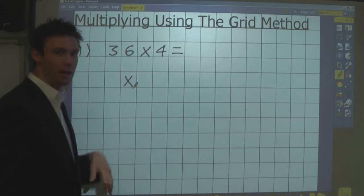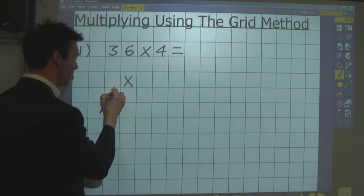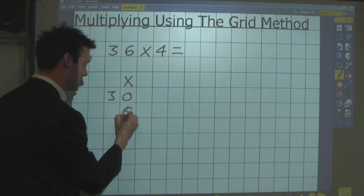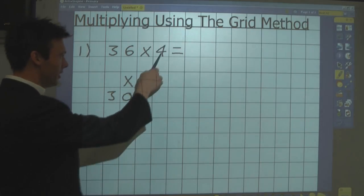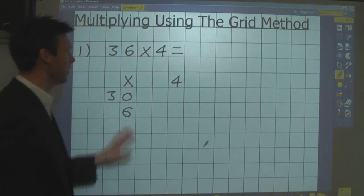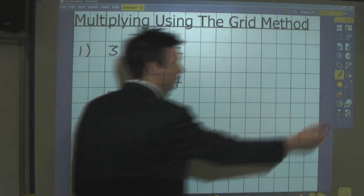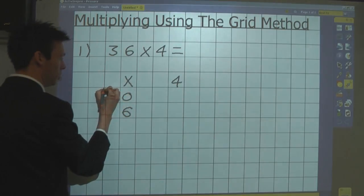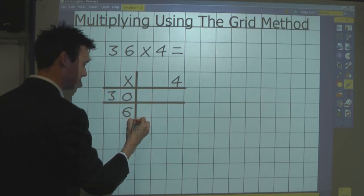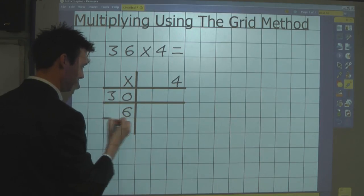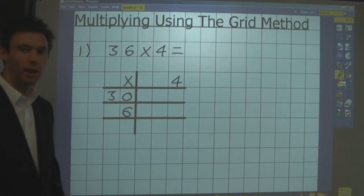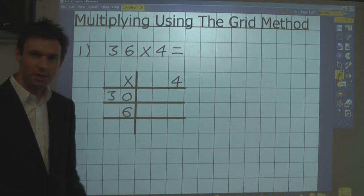You write the multiplication symbol, and then you partition this number into 30 and 6. And then we write the number we're multiplying by over here, and we're going to turn this into a grid now. So we draw our grid lines, like so. Now we do the calculation in stages.